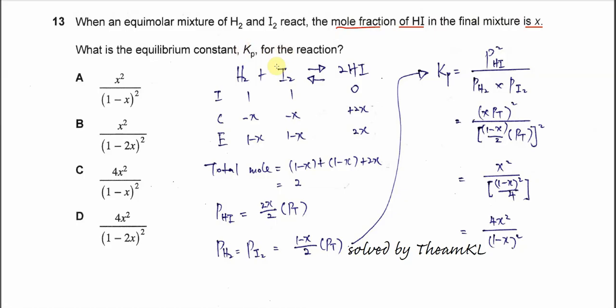So first we need to use the ICE table. I means initial, C means change, E means equilibrium. And we need to find the moles of the reactants and the products at equilibrium.